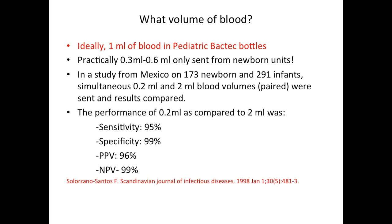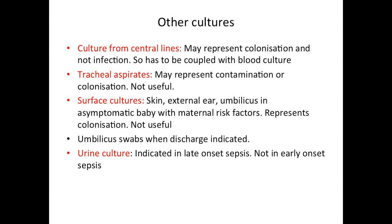The ideal blood volume for blood culture is 1 mL, but reports suggest even lower amounts can give a reasonably high yield. Other cultures like blood from central lines and tracheal aspirates are often performed in clinical practice. Central line cultures may just represent colonization and must be coupled with a peripheral blood sample to confirm central line-associated bloodstream infection. Tracheal aspirates may also represent contamination or colonization. Surface cultures are not clinically beneficial. Urine culture is indicated in late-onset sepsis; in early-onset sepsis the yield is very low.